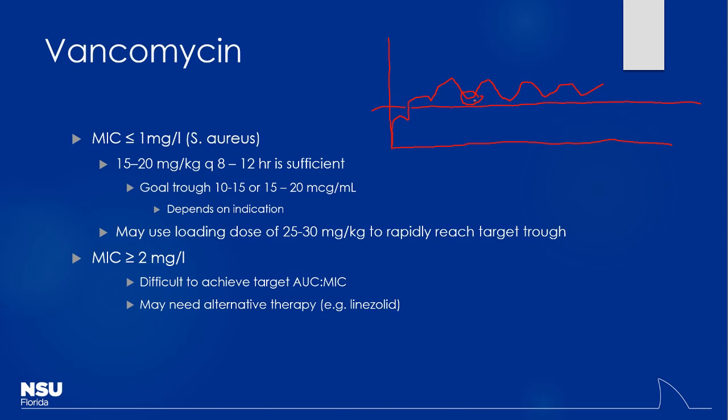You don't have to memorize specific levels, but depending on the indication, you may be shooting for a trough of 10–15 or 15–20. Higher levels are reserved for more resistant bugs or more difficult-to-penetrate tissues. Sites like bone with osteomyelitis may require higher levels. Lungs are very difficult for vancomycin to penetrate — if worried about MRSA pneumonia, you shoot for 15–20.